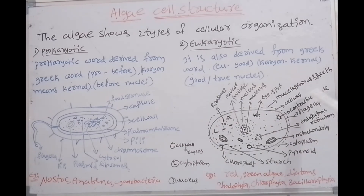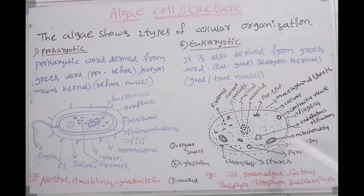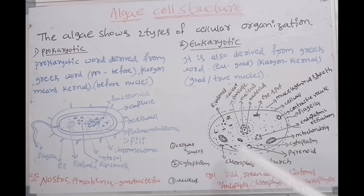The cell contains: contractile vacuole, flagella, endoplasmic reticulum, mitochondria, cytoplasm, pyrenoids, starch granules, chloroplast, ribosomes. All cell organelles are present in eukaryotic cell organization.